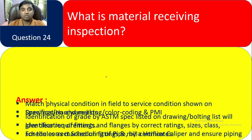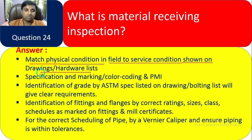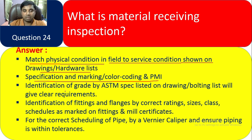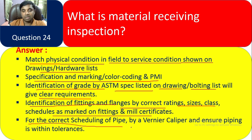Question 24: What is material receiving inspection? We match the physical condition in the field to the service condition shown on the drawings. We check specification and marking, color coding, and PMI. We verify identification of grade by ASTM specification listed on the drawing, and the bolting list. We check identification of fittings and flanges by correct rating, size, and class in the mill certificate. We also verify correct scheduling of pipe using a Vernier caliper and ensure piping is within tolerance.